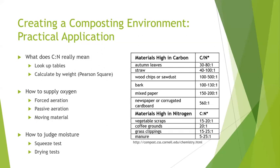Oxygen levels within a single pile can be highly variable based on a location's ability to have direct contact with air or if the areas are confined. Confined areas may become anaerobic. Because of this, there are various methods that can be utilized to increase the oxygen available to compost. The three primary methods for increasing oxygen within a compost pile are forced aeration, passive aeration, and moving material.